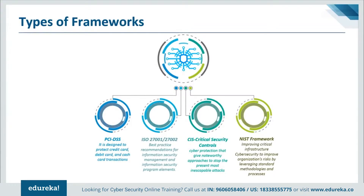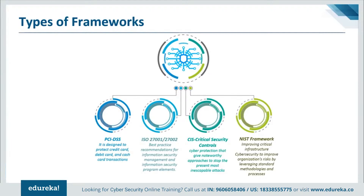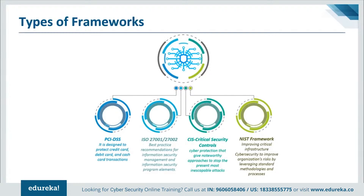The first type of framework is PCI DSS, which stands for Payment Card Industry Data Security Standards. It is a set of security controls required to implement protected payment account security, designed to protect credit cards, debit cards, and cash card transactions. The second type is ISO 27001 and 27002 from the International Organization for Standardization, which provides best practices recommendations for information security management and information security program elements.